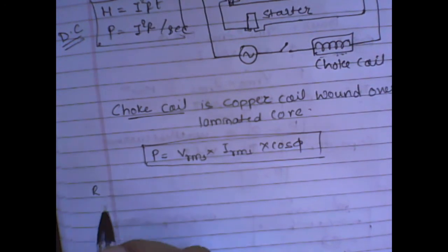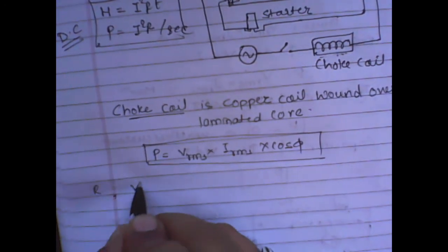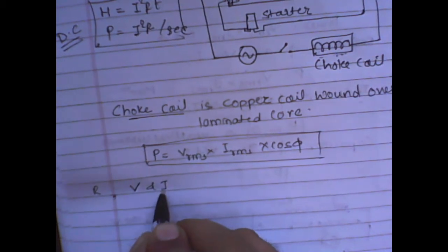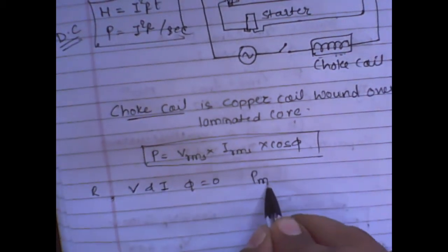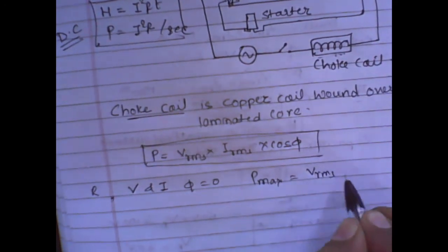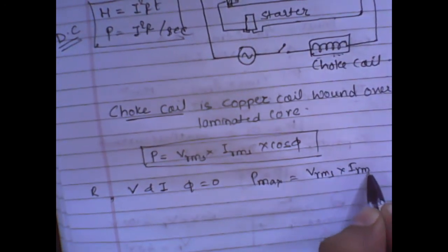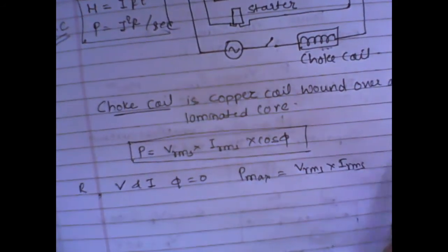If I use a resistor or a resistance in the AC circuit, we know that V and I, the phase difference between these two is zero. So the power will be maximum, that is V_RMS into I_RMS, because cos zero is one.